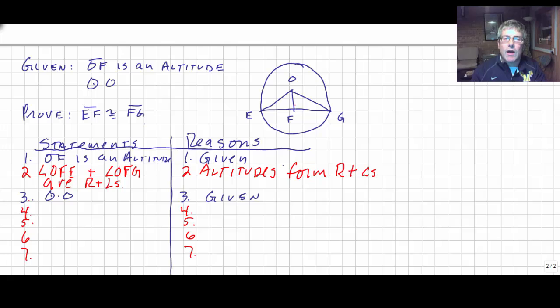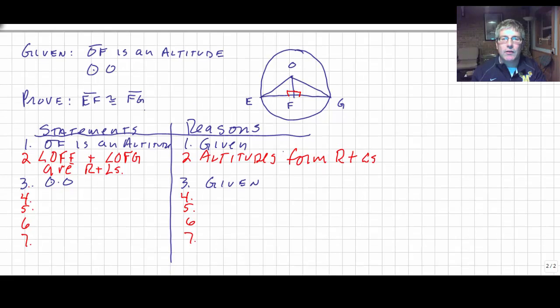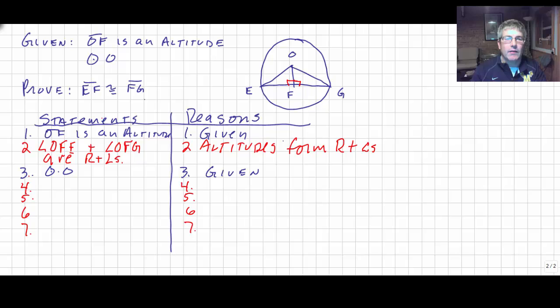So, now we've got our right angles. So, we have essentially established now that we have right triangles. In order to have right triangles, we've got to establish the right angles. So, that's going to be required if you plan to use HL.